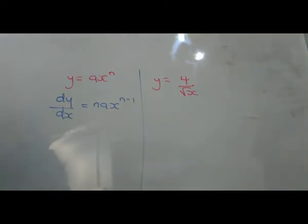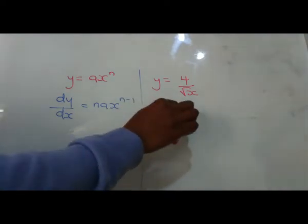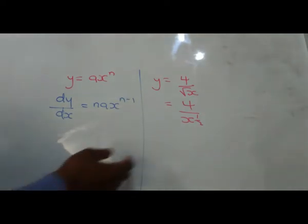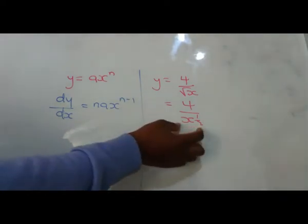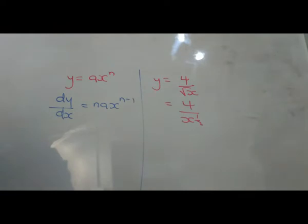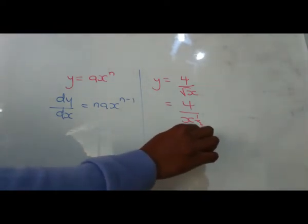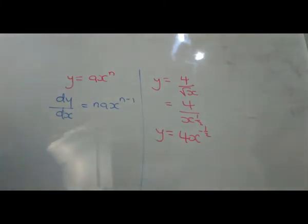I'm sure you understand from indices that the root of x is the same as x to the power of half. So we can rewrite this as 4 over x to the power of half. And paying respect that this number can go onto the numerator and it becomes 4x to the power of minus half.